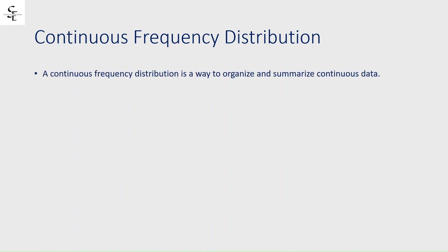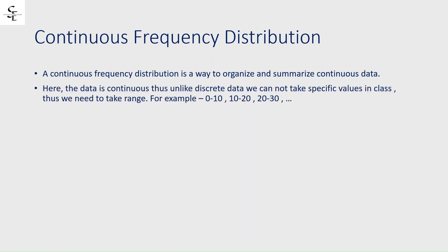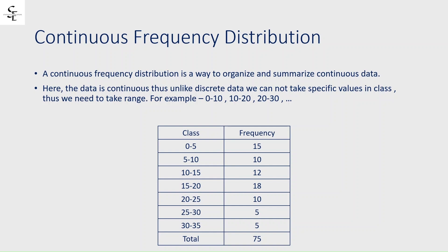A continuous frequency distribution is a way to organize and summarize continuous data. Here the data is continuous, so unlike discrete data we cannot take specific values in a class — thus we need to take a range, for example 0 to 10, 10 to 20, 20 to 30, and likewise. In the specimen classification, the class column shows ranges and the frequency indicates how many values fall in each range.